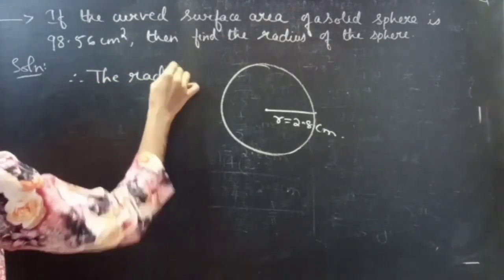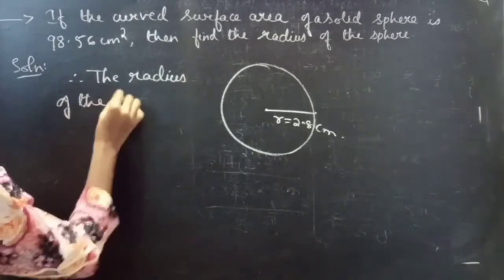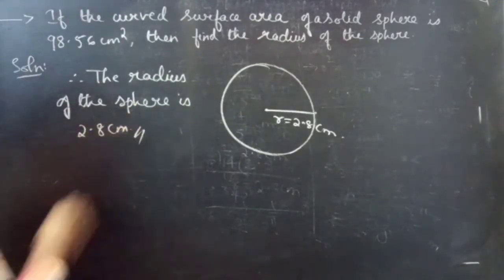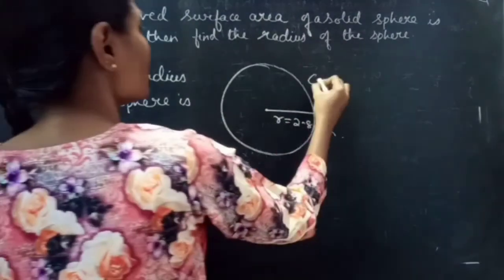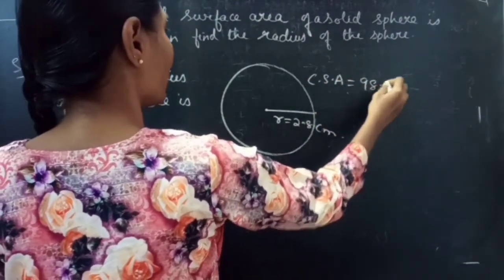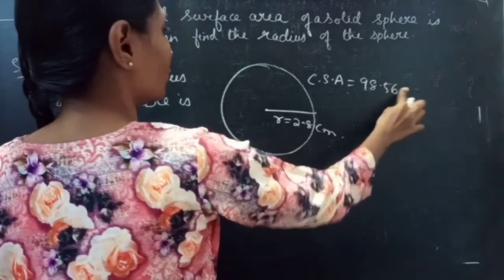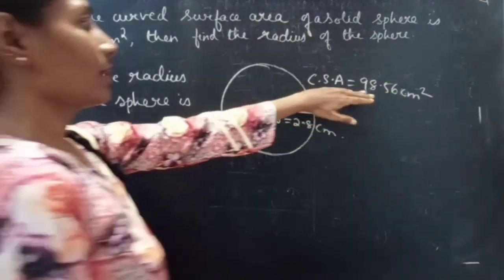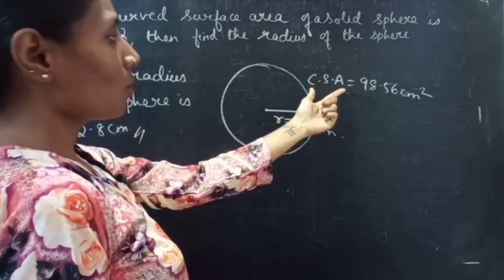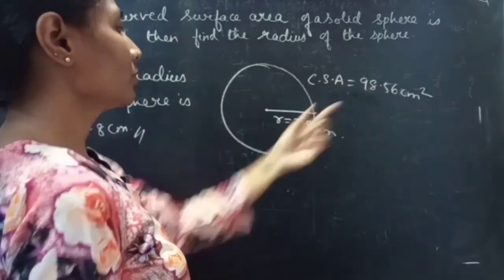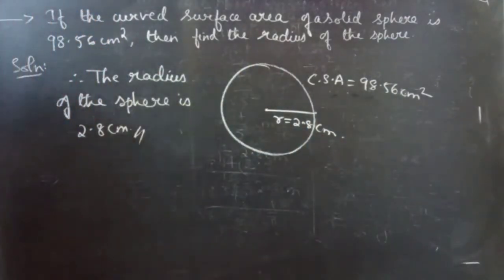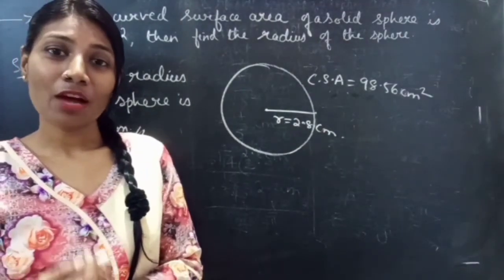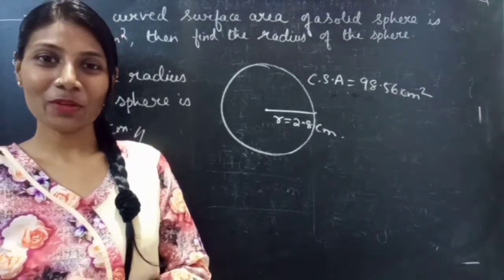Therefore the radius of the sphere is 2.8 centimeters. We were given the CSA of the sphere as 98.56 cm² and asked to find the radius. By applying the CSA formula 4πr², we found the radius of the sphere. Hope you understood — see you in the next video.